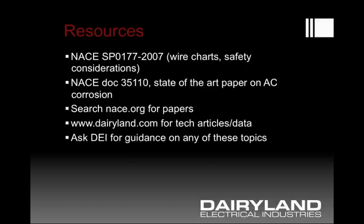There are a couple of sources for useful information on these topics. NACE SP0177 includes wire charts, sizing, human health conditions and criteria, and safe practices — it can be downloaded from the NACE website and NACE members have access free of charge. NACE document 35110 is a state-of-the-art paper on AC corrosion — a slightly different topic but very useful. Also, NACE.org has papers from past conferences on AC mitigation in general. The Dairyland.com website has technical articles, data, and sizing criteria available, and DEI can also be contacted for basic guidance on this type of work.